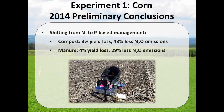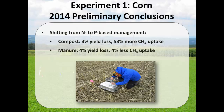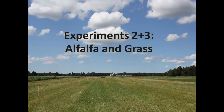Our preliminary conclusions for the corn study: shifting from N-based to P-based compost resulted in 3% yield loss and 43% less nitrous oxide emissions. Shifting from N-based to P-based manure resulted in 4–5% yield loss and 29% less nitrous oxide. Shifting from N-based to P-based in compost with the same yield loss gives 53% more methane uptake, but that is not the case for manure — you lose yield and have less methane uptake. And we're done with the corn study.